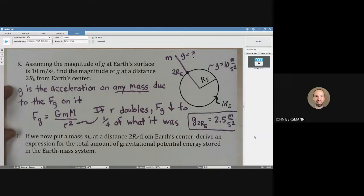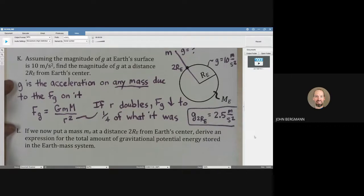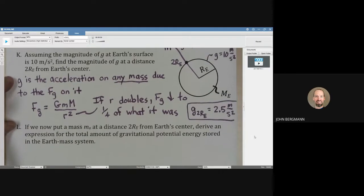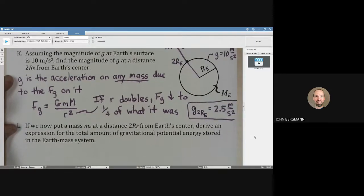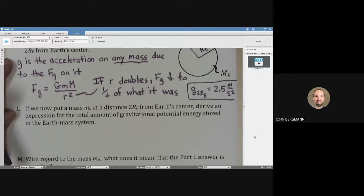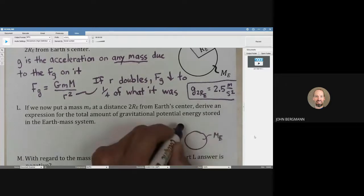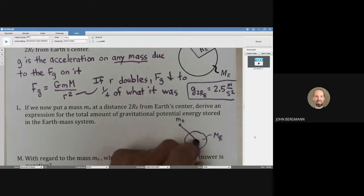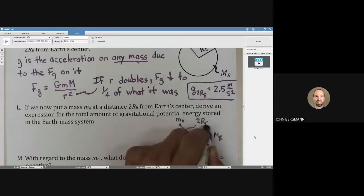Letter L: If we now put a mass M-naught at that distance, derive an expression for the total amount of gravitational potential energy stored in the system. All right, here's the Earth ME, and here's our mass M-naught, and that distance between them is 2RE.